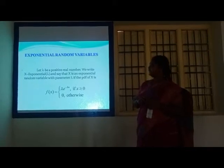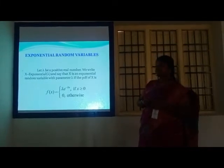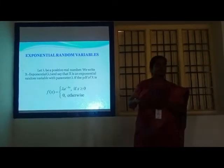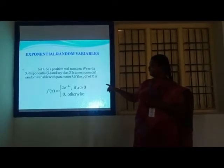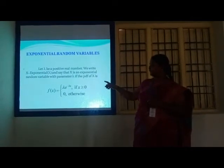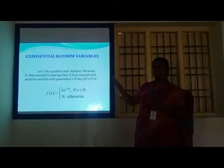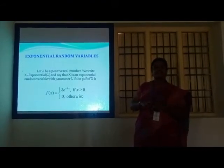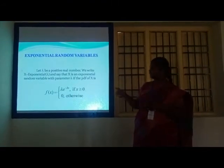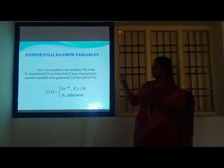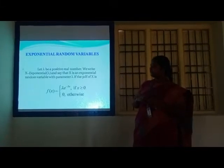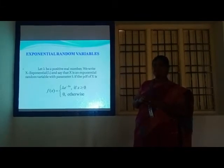Exponential random variables: the formula is f(x) = λe^(−λx) if x is greater than or equal to 0, and 0 otherwise, where λ is a positive real number.